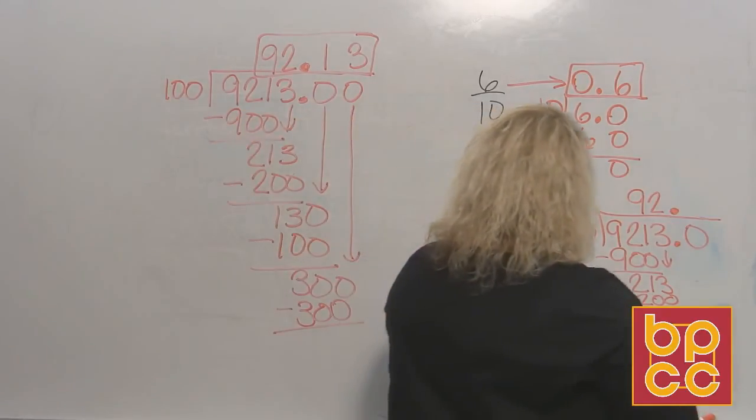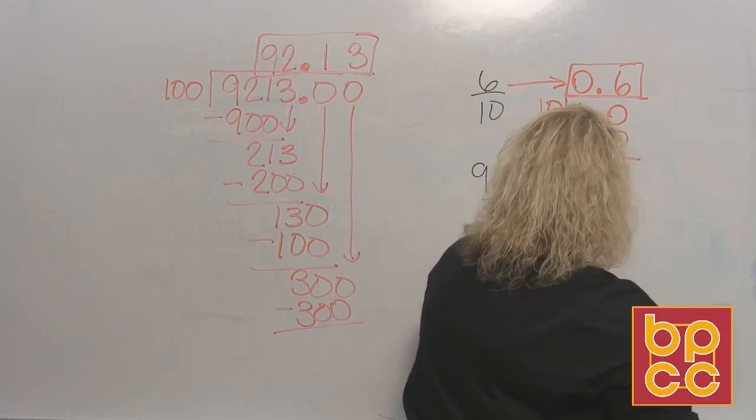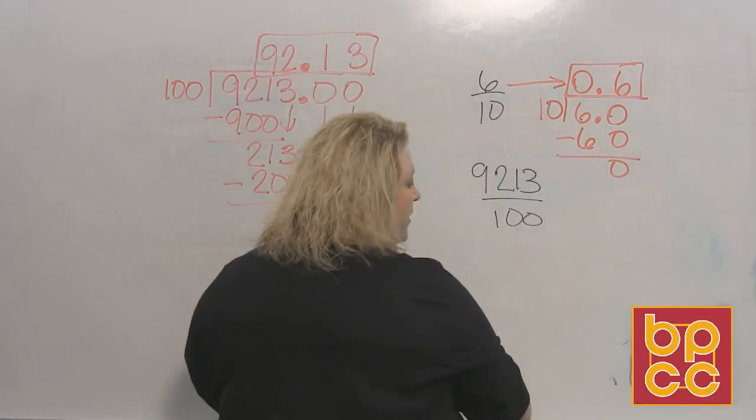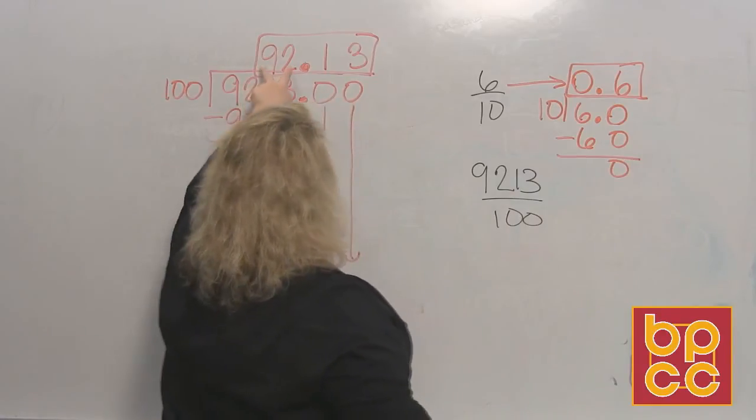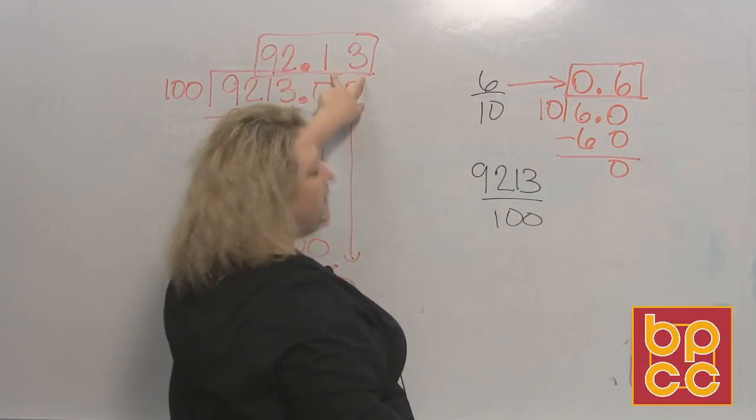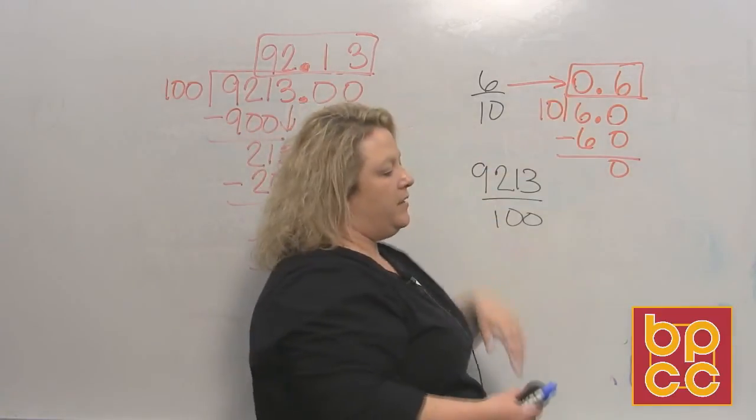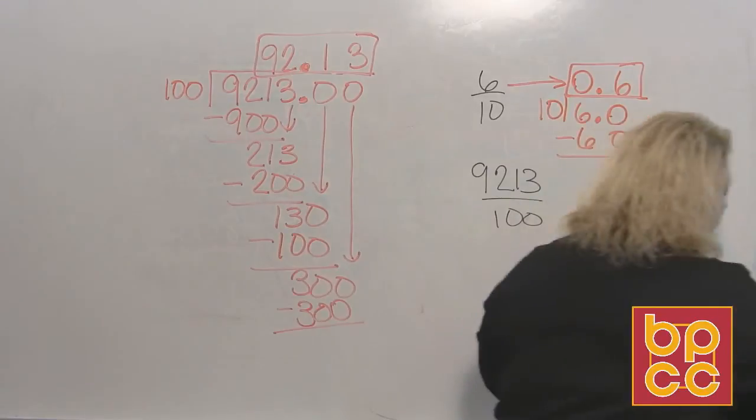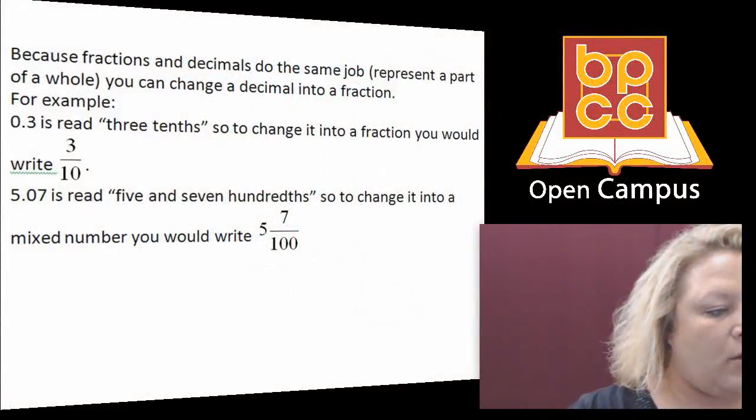So when you have this fraction, this improper fraction, know that when the top number is bigger, you have your improper fraction. When you change it into a decimal, you will have a whole number part and then a decimal part. If you have a proper fraction, you will only have the decimal. And that's all we have for this lesson and I'll see you next time.